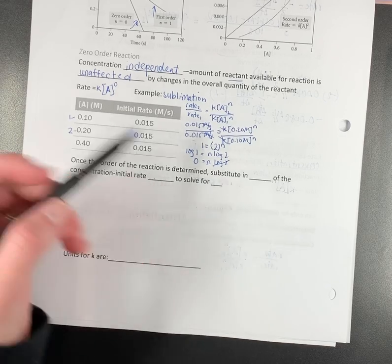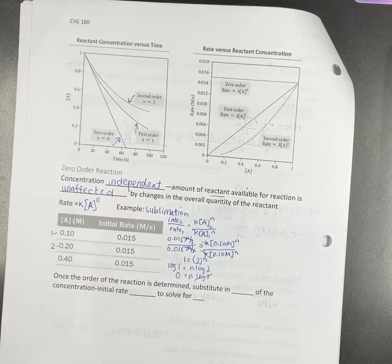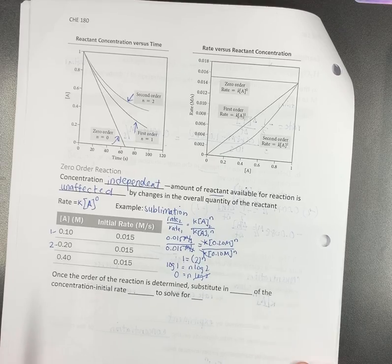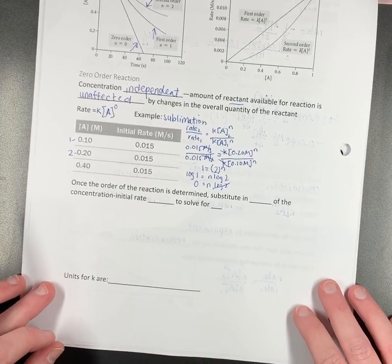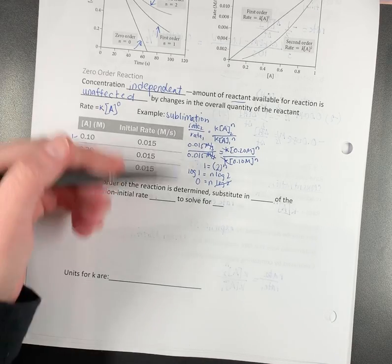0 equals log 2. Log 2 doesn't matter. 0. Look, I told you it was a 0 order. It's a 0 order. If we graph it, it looks like this. It all makes sense. So that was what we did.